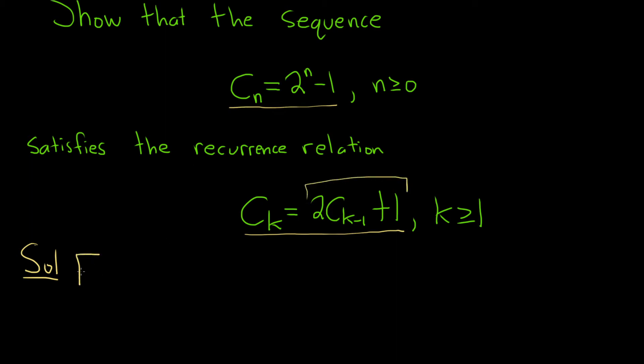So for k greater than or equal to 1, we're going to look at 2 times c sub k minus 1 plus 1. And so now what we'll do is we'll actually plug this in. We'll plug in c sub n into our expression here.